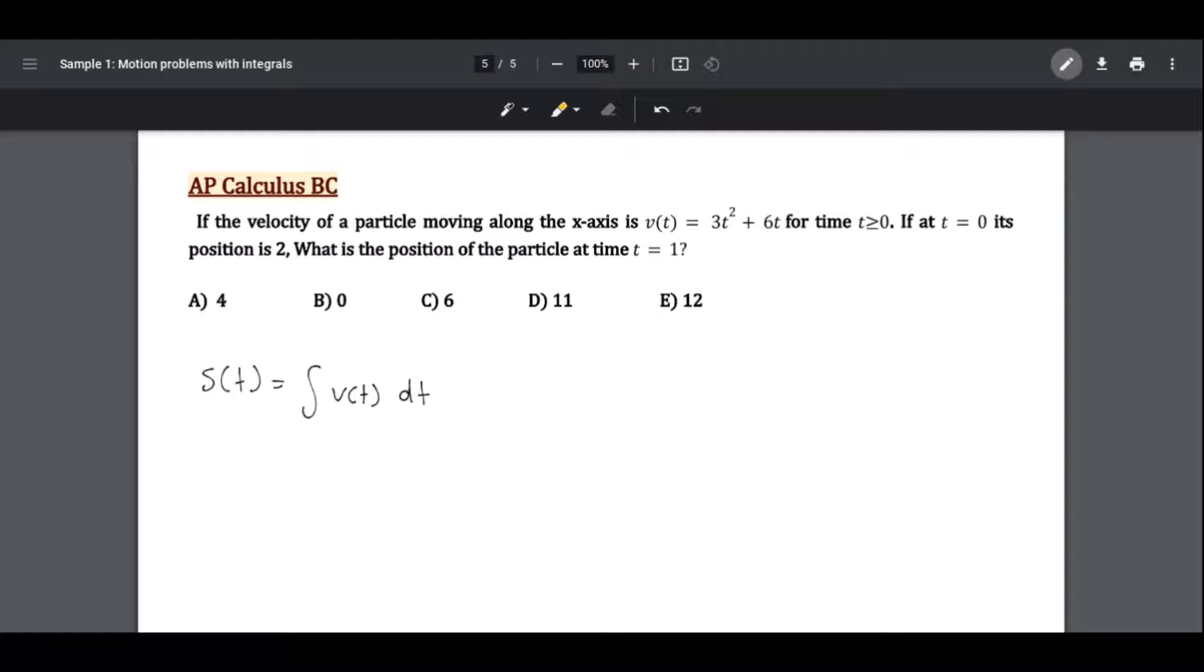Now we will use the information from the question to find the position. s(t) is equal to the indefinite integral of 3t² + 6t, so it is v(t), which we get from the question, 3t² + 6t dt.